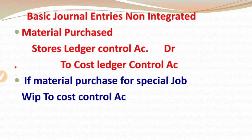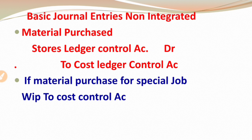Now let's discuss the basic journal entries under the non-integrated system one by one. Number one is materials purchase. The entry for materials purchase is: stores control account debit to cost ledger control account. The trick to remember is that material is replaced with stores. So wherever you see material, write stores. Entry: stores control account debit to cost control account.